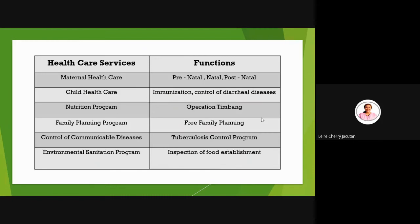Next is family planning programs, where free family planning services are provided especially to newlyweds, to control excessive population growth. Through family planning, couples learn how to plan their parenthood, thus avoiding unwanted pregnancies. Next is the control of communicable disease — these are contagious diseases. There is a tuberculosis control program, the TB DOTS program, where if you have TB you can get free medicine against TB in your barangay.